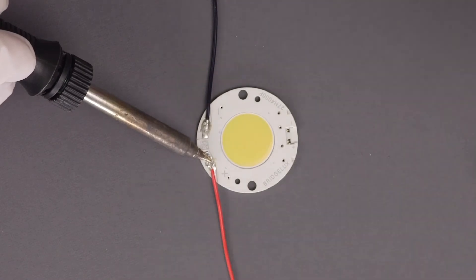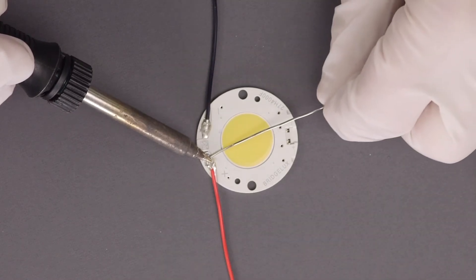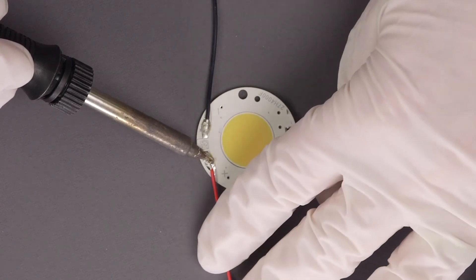If needed, bring the solder wire to the area just below the solder tip. Only a small amount of solder is necessary to form a joint.